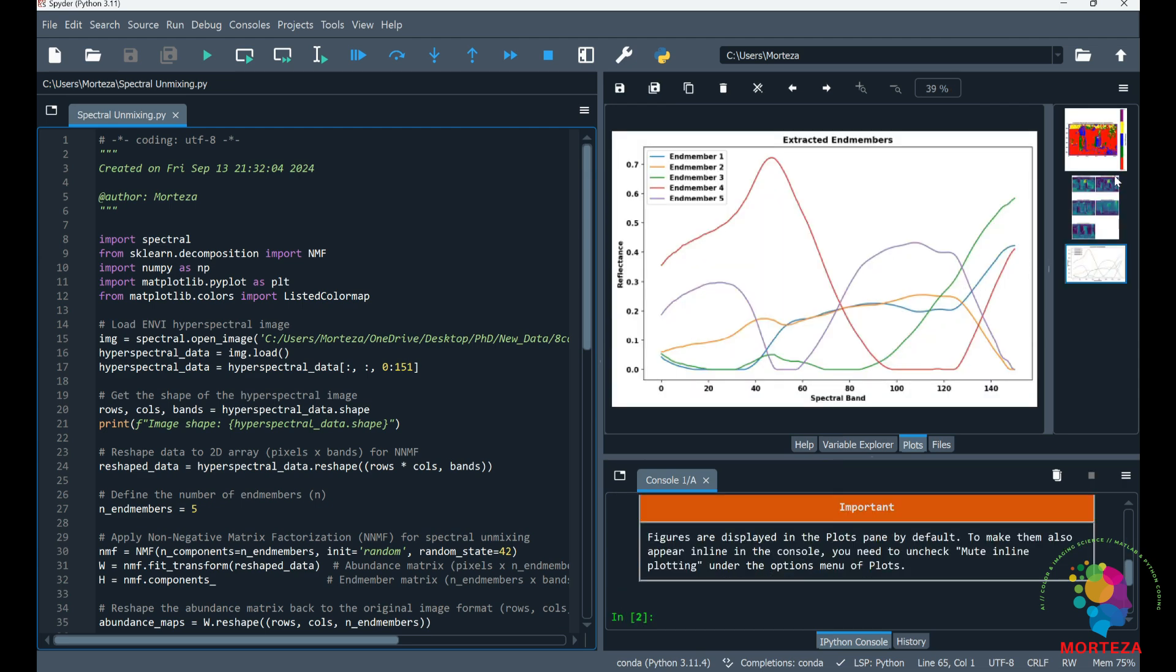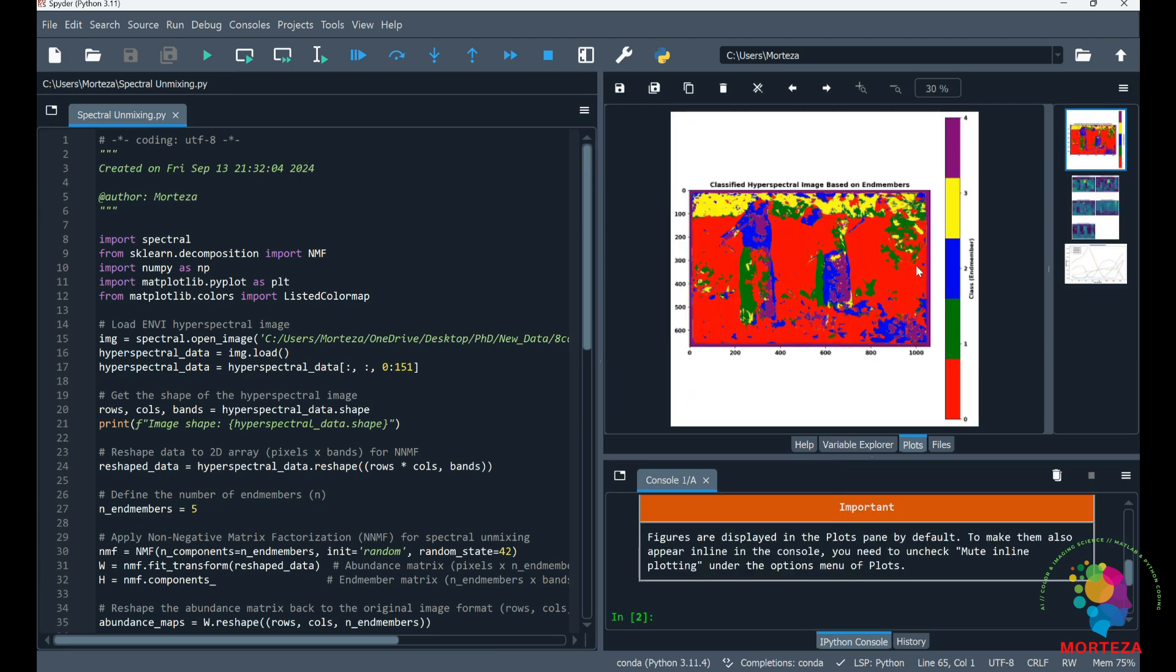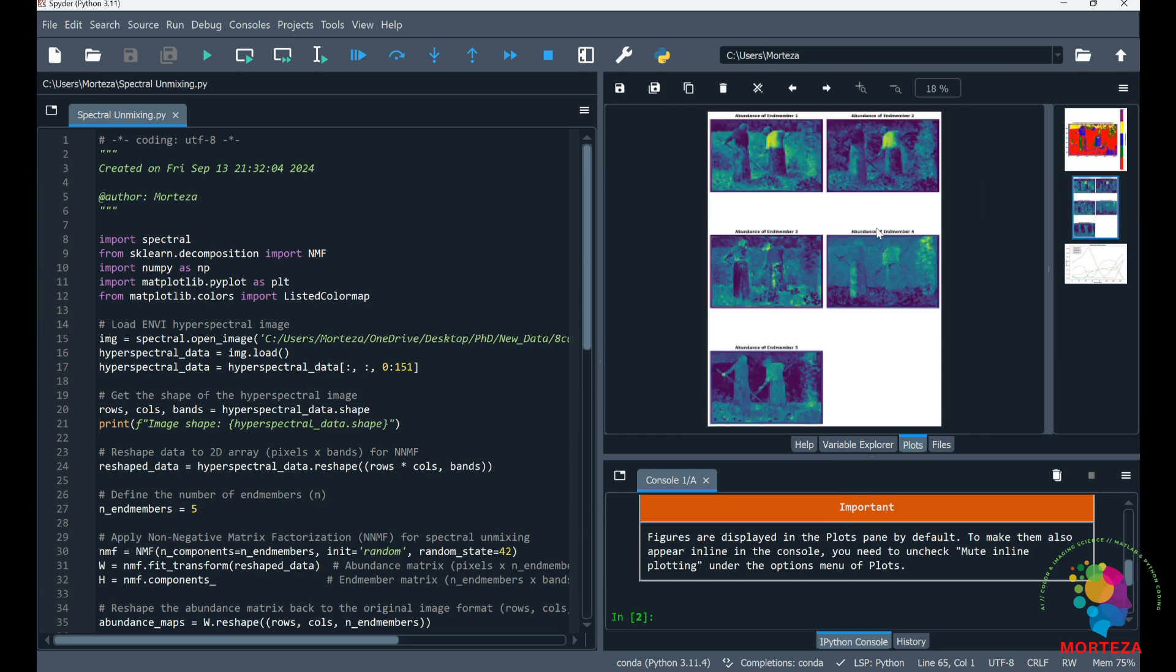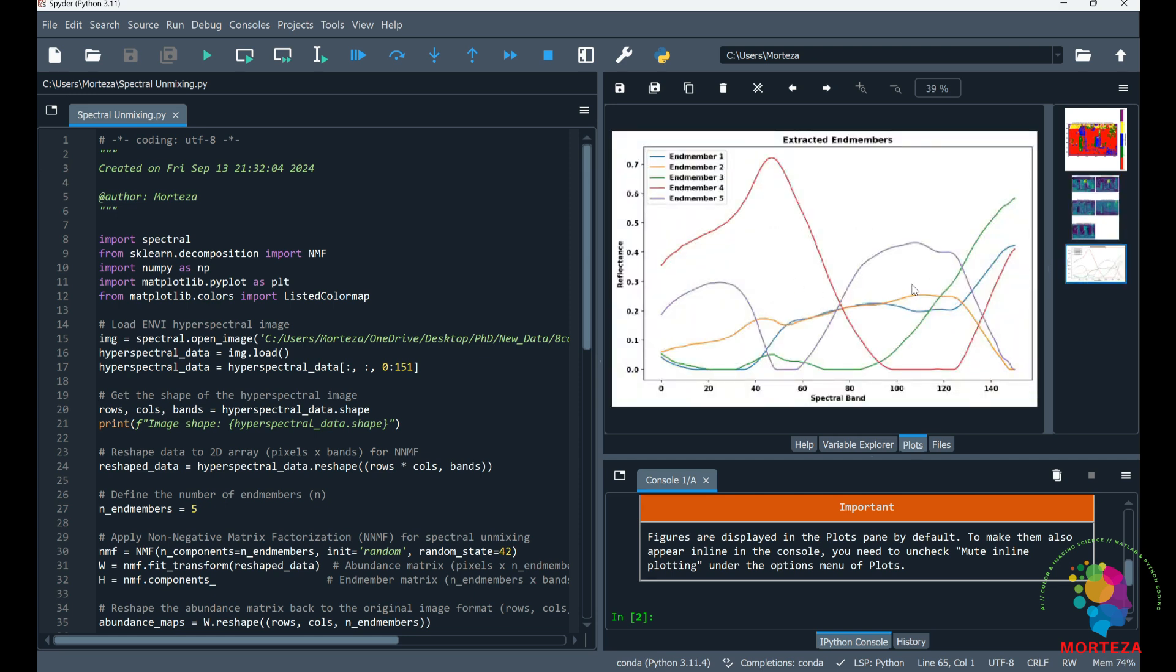Okay, that's it. This is the classification map, as you can see, for 5 endmembers. And these are the abundance map for each endmember. And these are the extracted endmembers from my hyperspectral data.